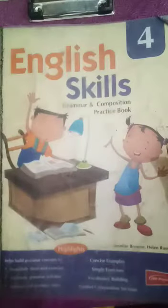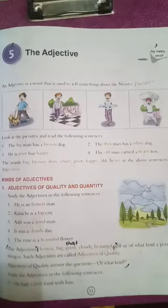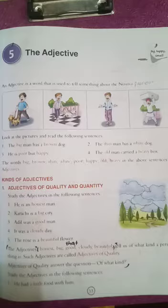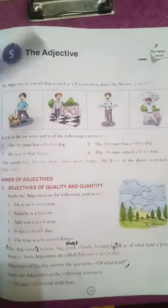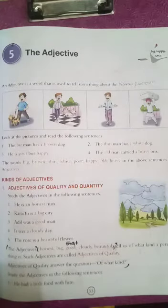We are studying the fifth chapter of grammar review — adjectives, a very important part of speech. An adjective is a word used to tell something about a noun or pronoun. Nouns are words used to name any person, place, or idea, and pronouns are words used instead of a noun to avoid repetition of the same noun again and again.